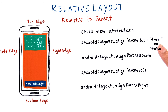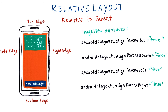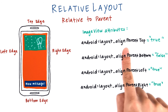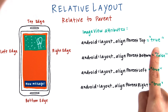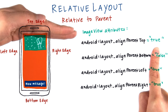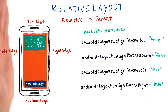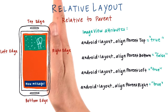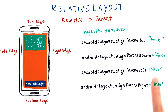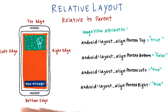You can mix and match and use multiple of these attributes at a time. Take this image view as an example. We would set the attribute alignParentTop to be true, because it's aligned to the parent's top edge. It's also aligned to the parent's left and right edges, so we set left to be true and right to be true as well. It's not aligned to the parent's bottom edge, so we set that to be false.